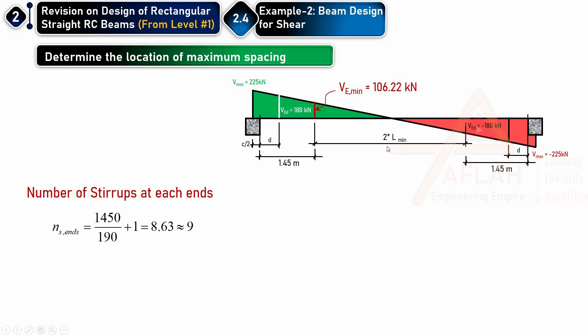So the number of bars can be calculated. At the end I have 1.45 divided by the spacing plus one, I have nine. And at the mid span I will not add one because already the reinforcement from here is here and the reinforcement from this side is here, so directly dividing it and I will get nine bars.